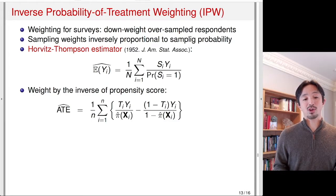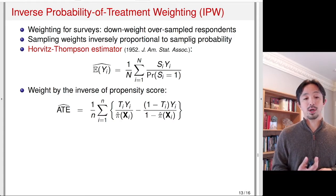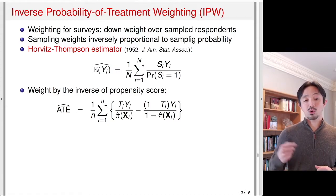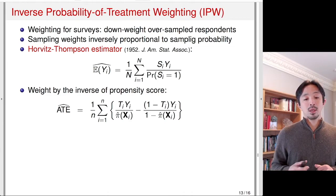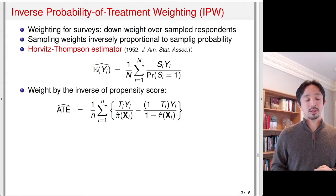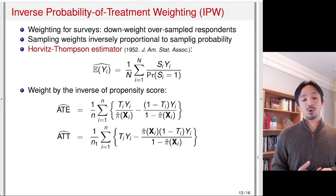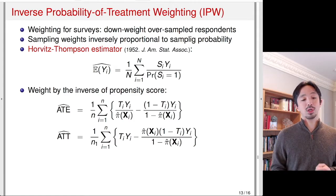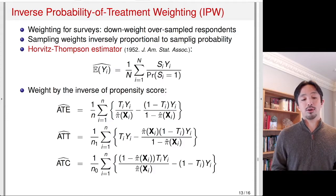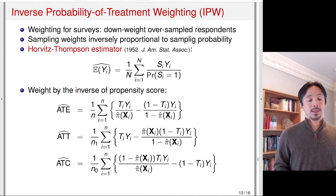In observational studies, you estimate the propensity score — the conditional probability of receiving treatment given x_i — and then use that as a weighting procedure. This is completely analogous to the Horowitz-Thompson estimator in the survey context, where the treatment group is weighted inversely proportional to the propensity score, and the control group is weighted inversely proportional to 1 minus the propensity score. This gives an estimate of the average treatment effect. A similar weighting scheme exists for the average treatment effect for the treated, where the weights are the propensity score divided by 1 minus the propensity score, and similarly for the control. If the propensity score is identical for everyone, it reduces to the difference-in-means estimator, which is a special case of IPW where no weighting is necessary.